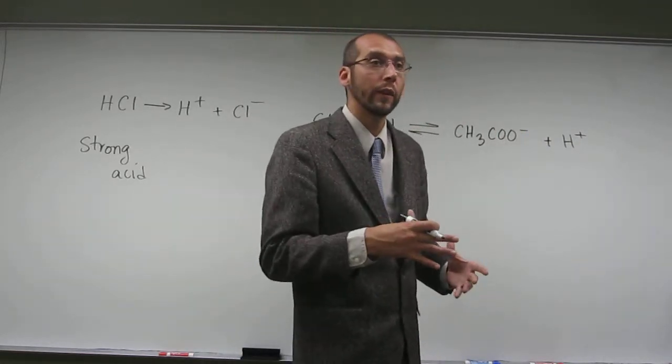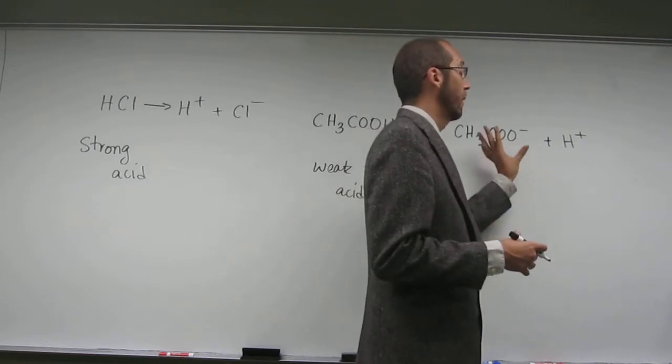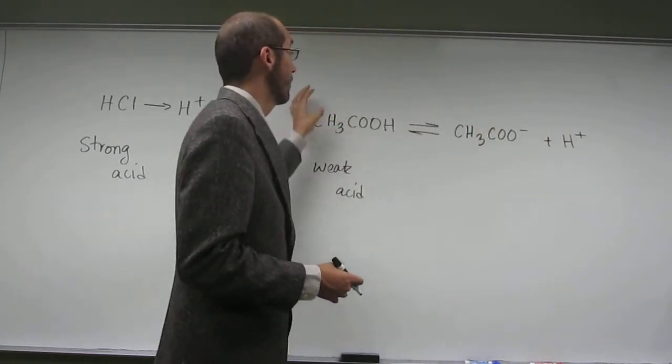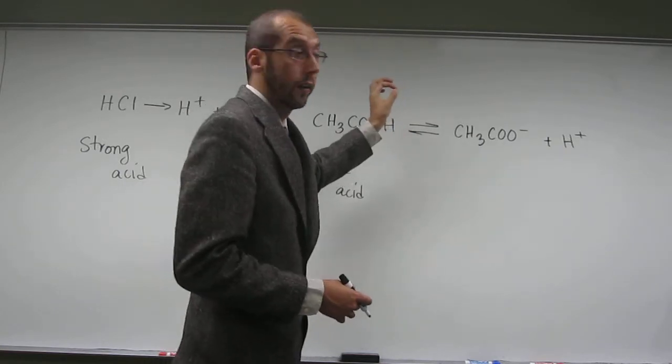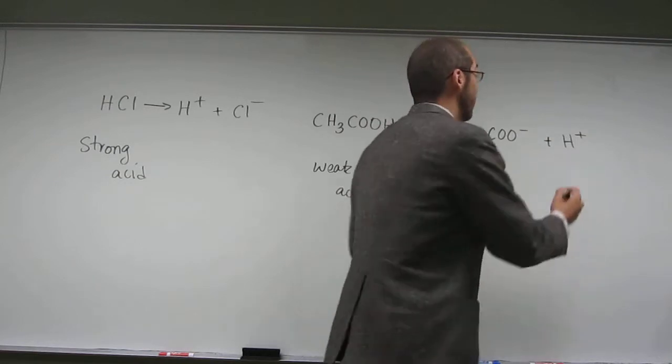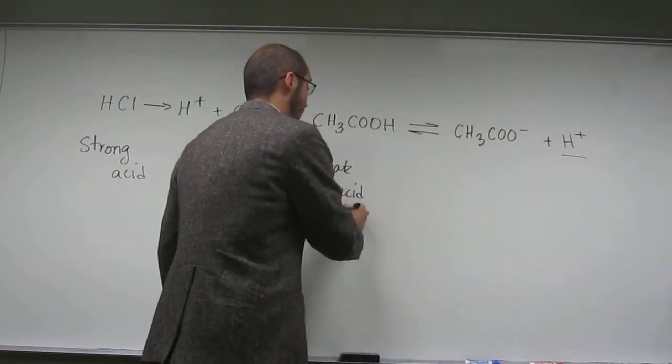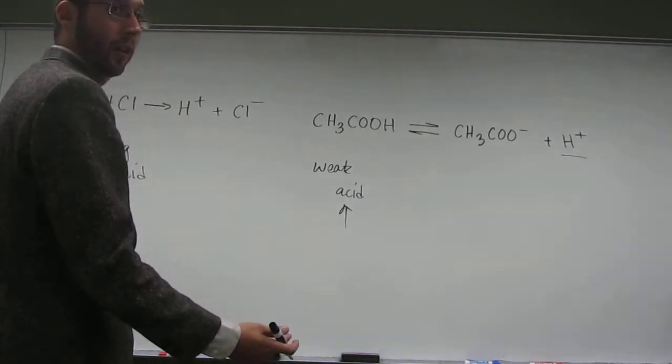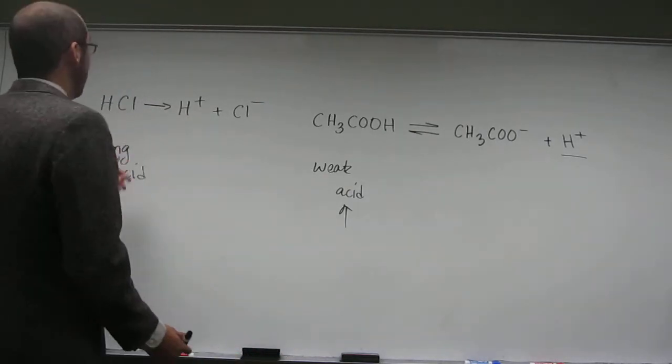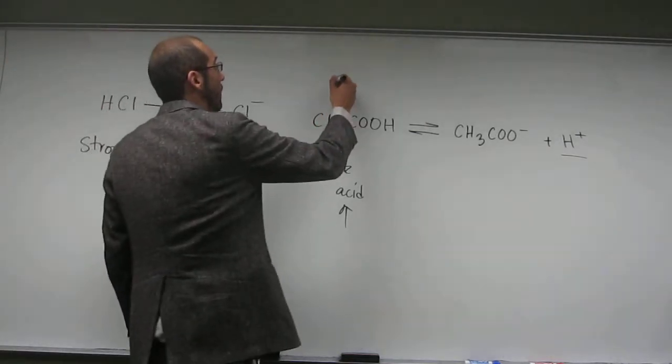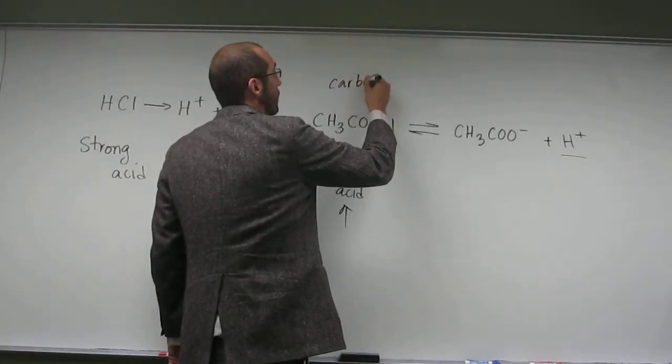If you can't remember how the electrons are moving, just remember, the additive sum of this side has to be the same as the additive sum of this side. So since there's no overall charge here, there has to be no overall charge here. And you know we have to have an H+. Why? Because we have an acid, right? So which one of these acids is stronger acid? This one's the stronger acid because this one is a carboxylic acid.